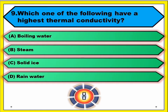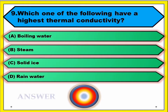Question number nine: which one of the following has the highest thermal conductivity? Answer: solid ice.